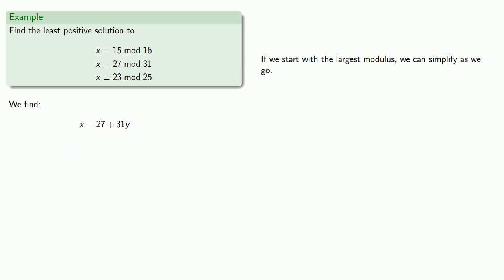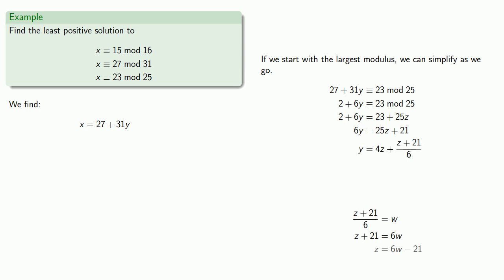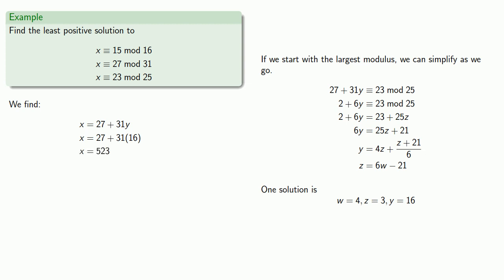So our second largest modulus is twenty-five, so we know that twenty-seven plus thirty-one y satisfies this first congruence, and we also want it to satisfy the second congruence. So we want twenty-seven plus thirty-one y to be congruent to twenty-three mod twenty-five. We can reduce our coefficients and then solve. If we pick w equals four, we'll get positive solutions. So we let w equals four, and so we find y equals sixteen. And so x equals five twenty-three solves both of these congruences.